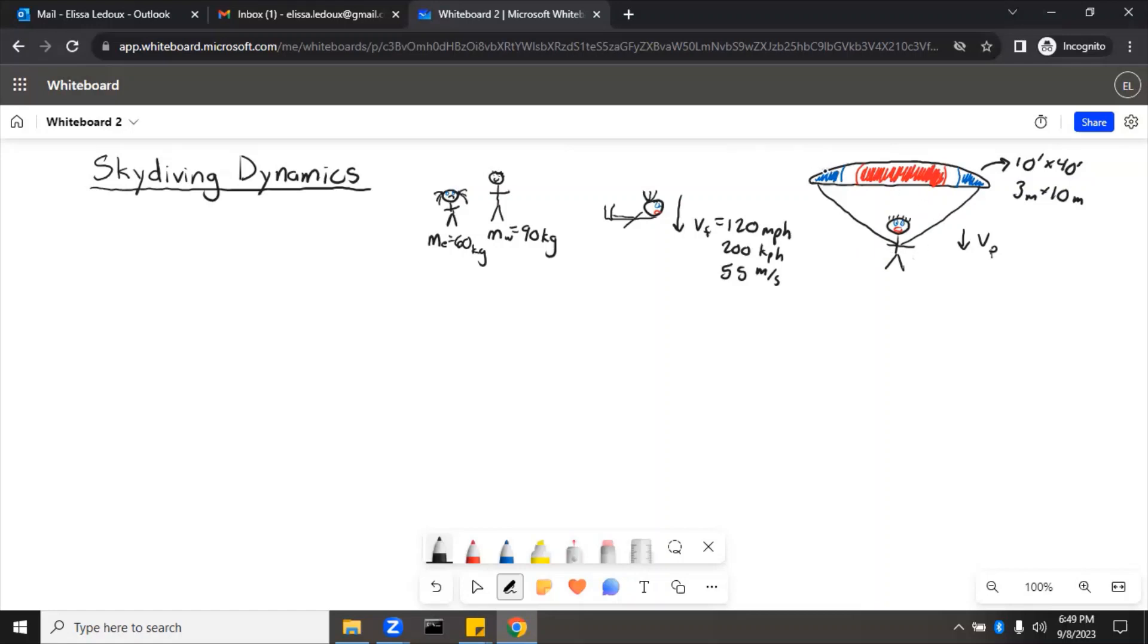So you can actually look up drag coefficients for parachutes. This one was CD equals 1.75. And drag coefficient has no units. And then air density is another thing that you can look up. So density of air is 1.225 kilograms per meter cubed. So these are all the different things that we can know.